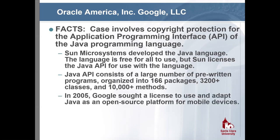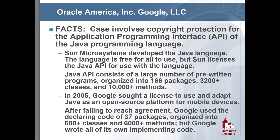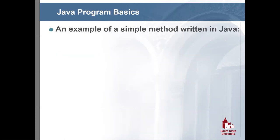Sun allowed anyone to use the Java API for free if willing to release their own source code on an open-source basis. If you wanted to keep your source code private, you paid for a license. In 2005, Google sought a license to use and adapt Java as an open-source platform for mobile developers writing smartphone programs. Google didn't want to release its source code as open source, so they sought a paid license from Sun, but they couldn't agree on terms.